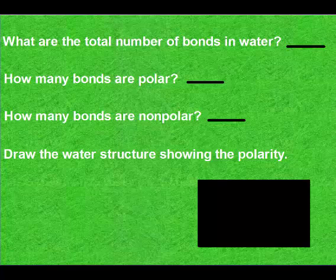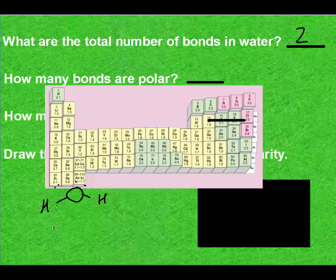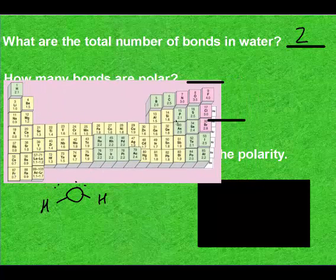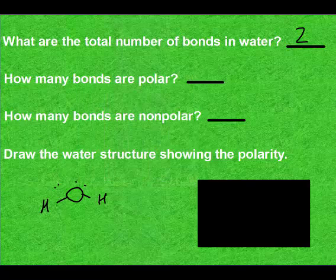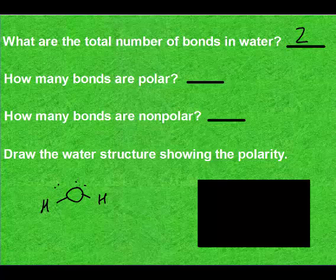It asks what are the total number of bonds in water. The first thing you need to do to solve these types of problems is draw water. Then we can count the number of bonds. We have two bonds - single bonds, double bonds, triple bonds, it doesn't matter what type of bonds. We have two bonds. And both of these bonds are between hydrogen and oxygen, so they're either going to be both polar or both nonpolar. Looking at the electronegativity values, oxygen is 3.5 and hydrogen is 2.1. That's a difference of 1.4. Because the electronegativity difference is more than 0.4, both of those bonds are polar. We have two polar bonds and no nonpolar bonds.